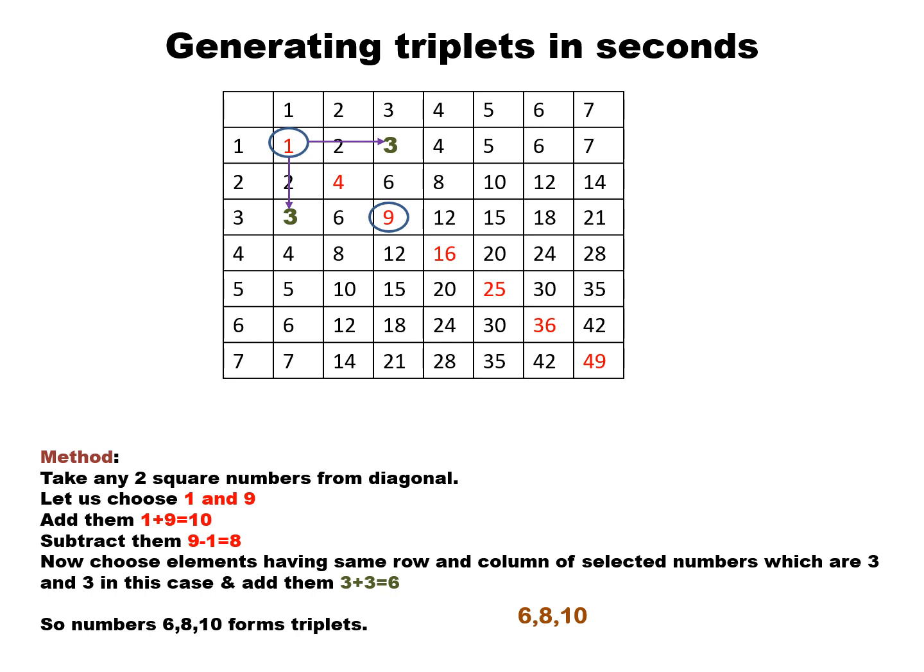Then in the second or third row we are going to write the multiples or table. For one we have 1, 2, 3, 4, 5, 6, 7. Then for two: 2, 4, 6, 8, 10, 12, 14. Then for three: 3, 6, 9, 12, and so on. We will continue our table and suppose we want to find out the triplets.